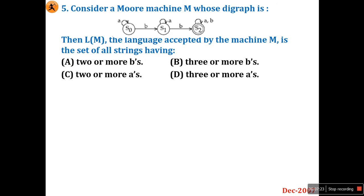Question number five: consider a Moore machine M whose diagram has S as the initial state, S1 and S2 as other states, and input symbols a and b. The language L(M) accepted by machine M is the set of all strings having two or more b's, three or more b's, two or more a's, or three or more a's? Here 'a' is a self-loop — it may generate any number of a's. To reach S0 to S1, it must read b at least once.